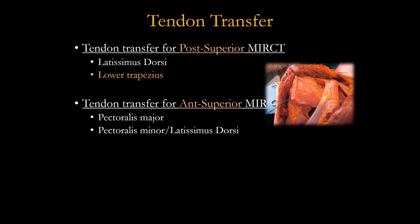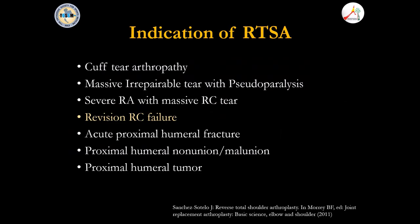Another option is tendon transfer — I have limited experience. The concept is to restore a good force couple. For anterior-superior tears, pectoralis major or pectoralis minor transfer is common. For the posterior cuff, latissimus dorsi transfer is preferred. A new concept is the lower trapezius transfer proposed by L. Elhassan, who will come to our meeting.